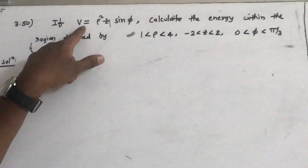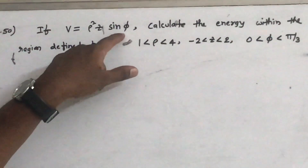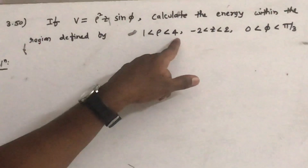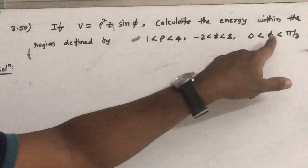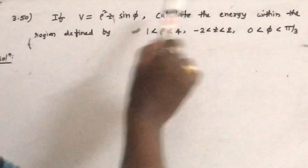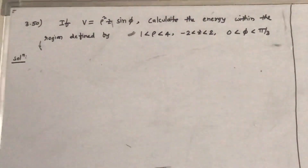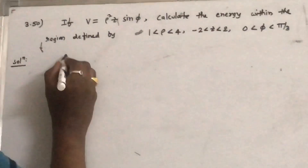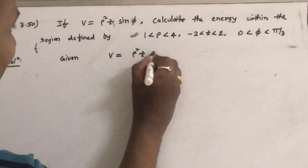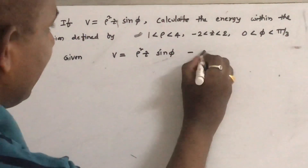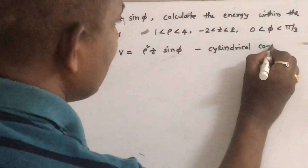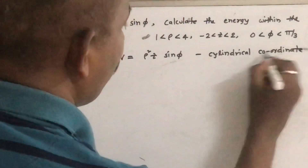The problem is given like this: if V is equal to ρ² z sin φ, calculate the energy within the region defined by 1 < ρ < 4, -2 < z < 2, and 0 < φ < π/3. It is asked to find out the energy stored in this region. The potential is given as ρ² z sin φ, which is given in cylindrical coordinate system.